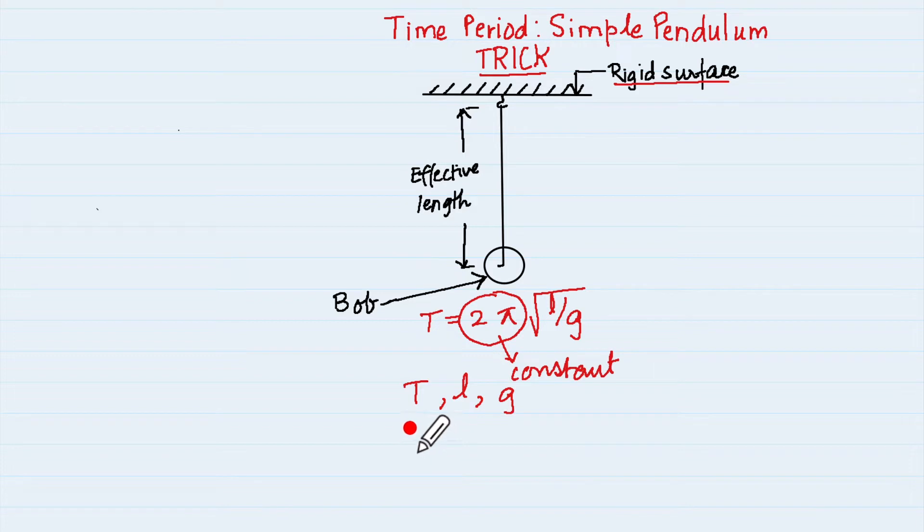So you see that time not just depends upon the length but it is dependent upon the root of length and because length is in the numerator it will be directly proportional. And it also depends upon g but not just g but under root g. And where is that g in the denominator?